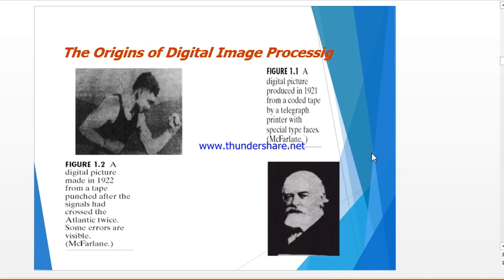What are the origins of digital image processing? Observing figures 1.1 and 1.2, one of the first applications of digital images was in the newspaper industry, when pictures were sent by submarine cable between London and New York. The image was transmitted and reproduced on a telegraph printer fitted with a type face simulating a half-tone pattern.